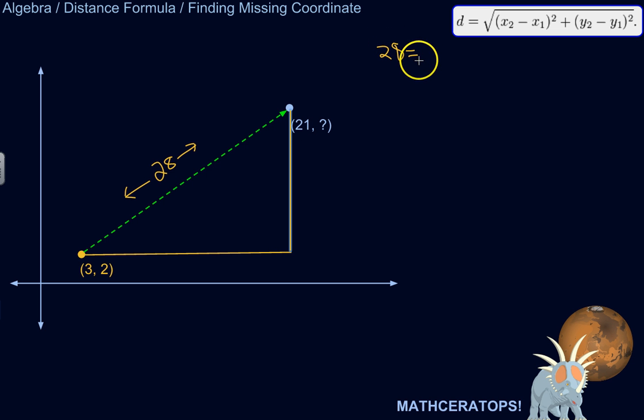So 28 is equal to the square root of... Let's see. So we're going to call this point 1 just to keep things straight. And this point 2. So x2 would be the x-coordinate of point 2. So 21 minus x1, 3, squared, plus y2, which we don't know. So we're just going to call it y, minus y1, which we do know, which is 2, squared. All right. Now let's just plug through this thing and see what happens.